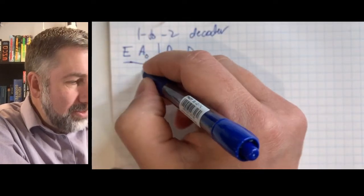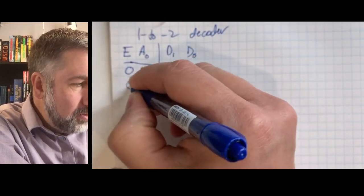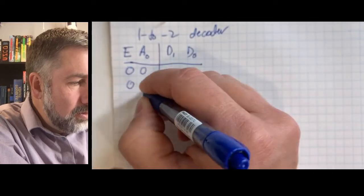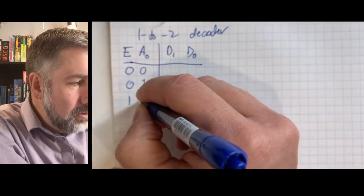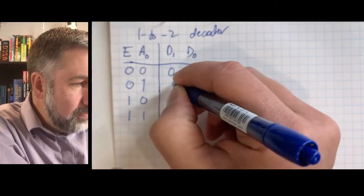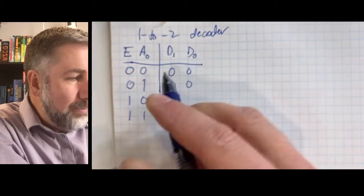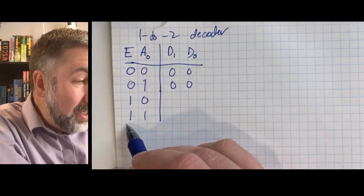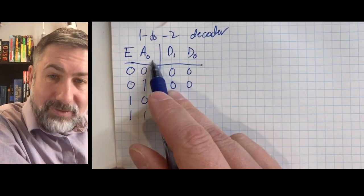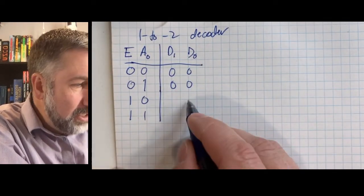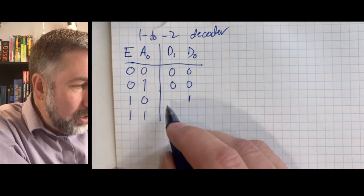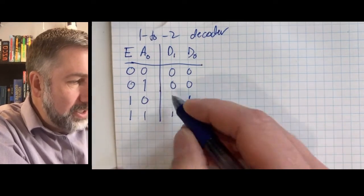When the enable is 0, the outputs are all 0. When the enable is 1, the output corresponds to the address: if the address is 0, D0 is active; if it's 1, D1 is active.